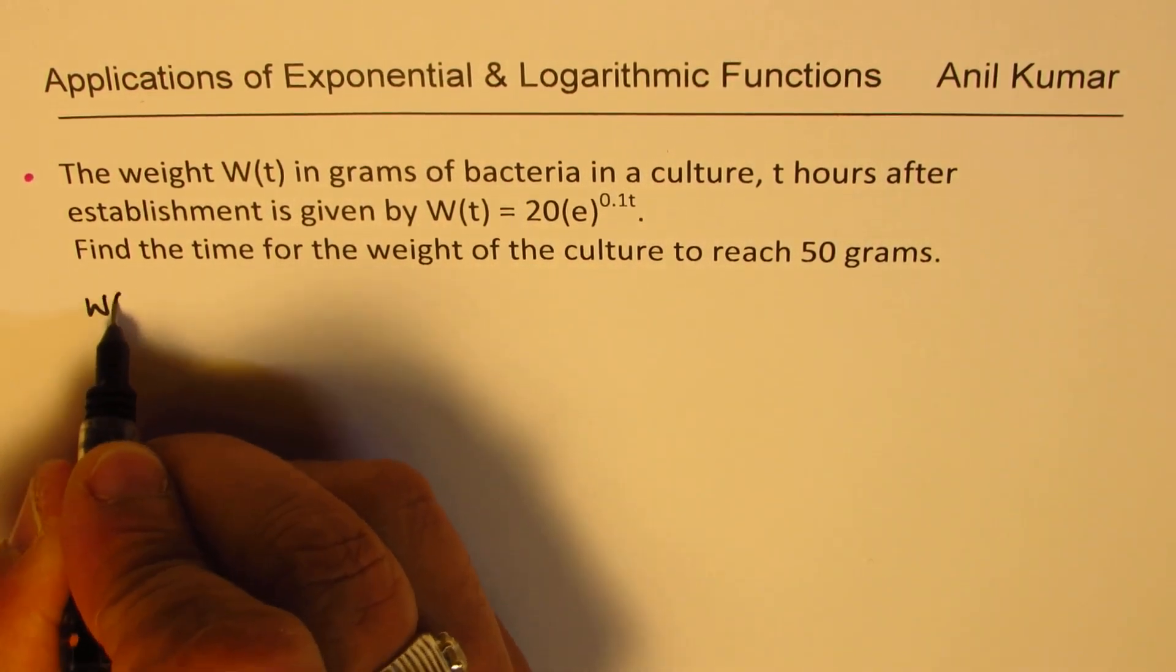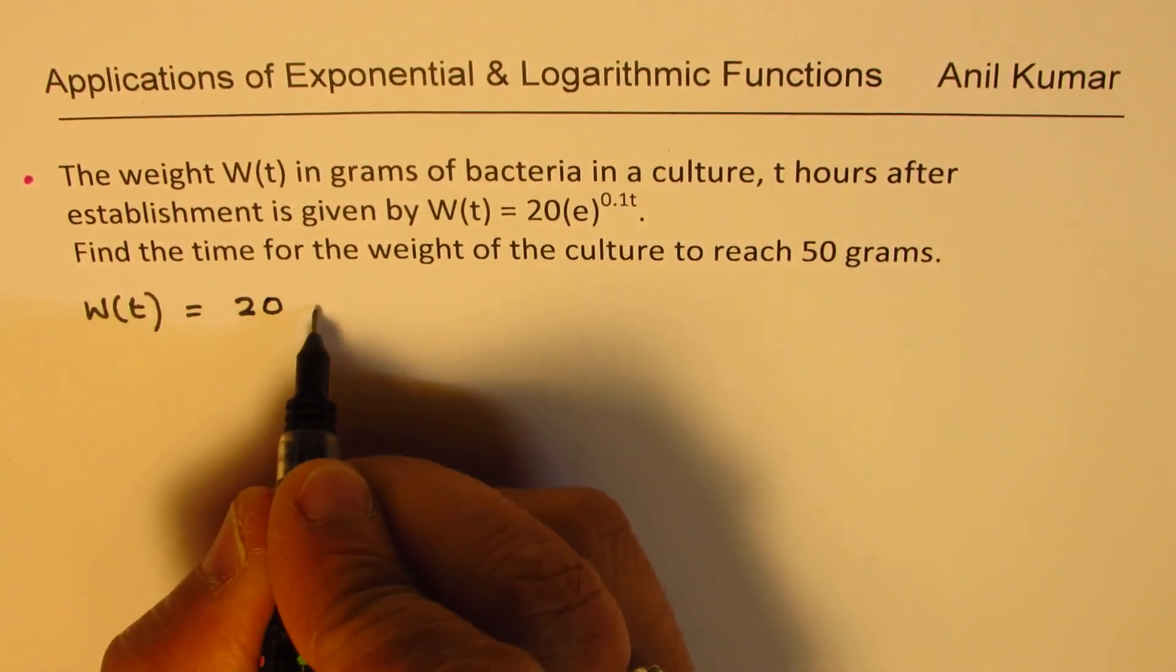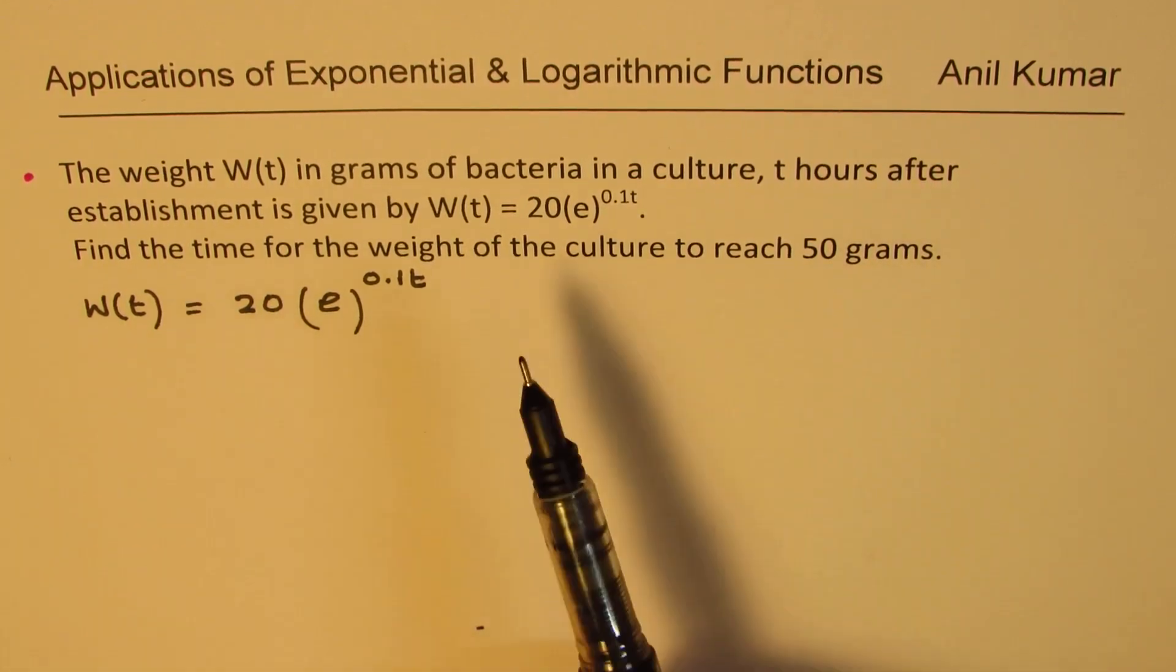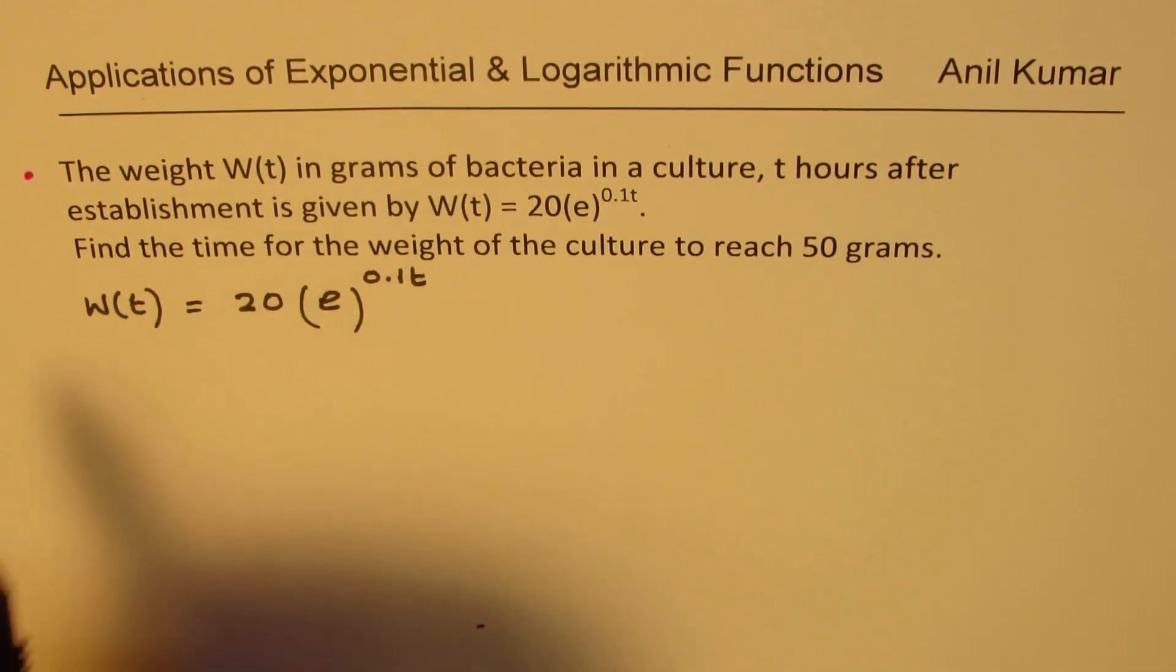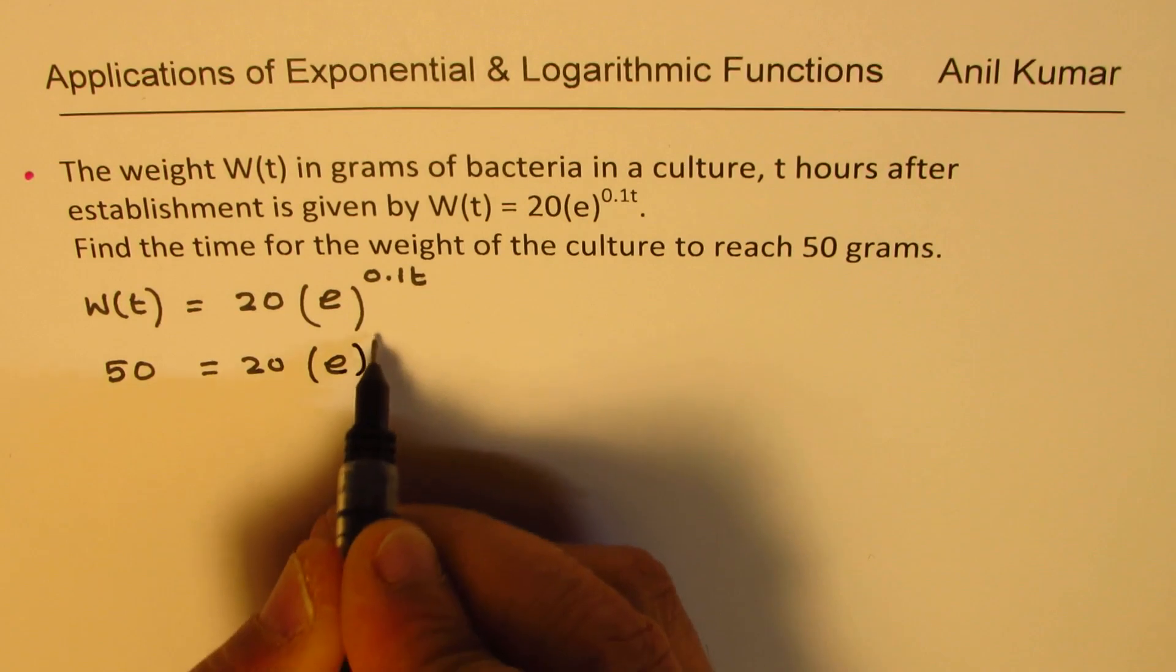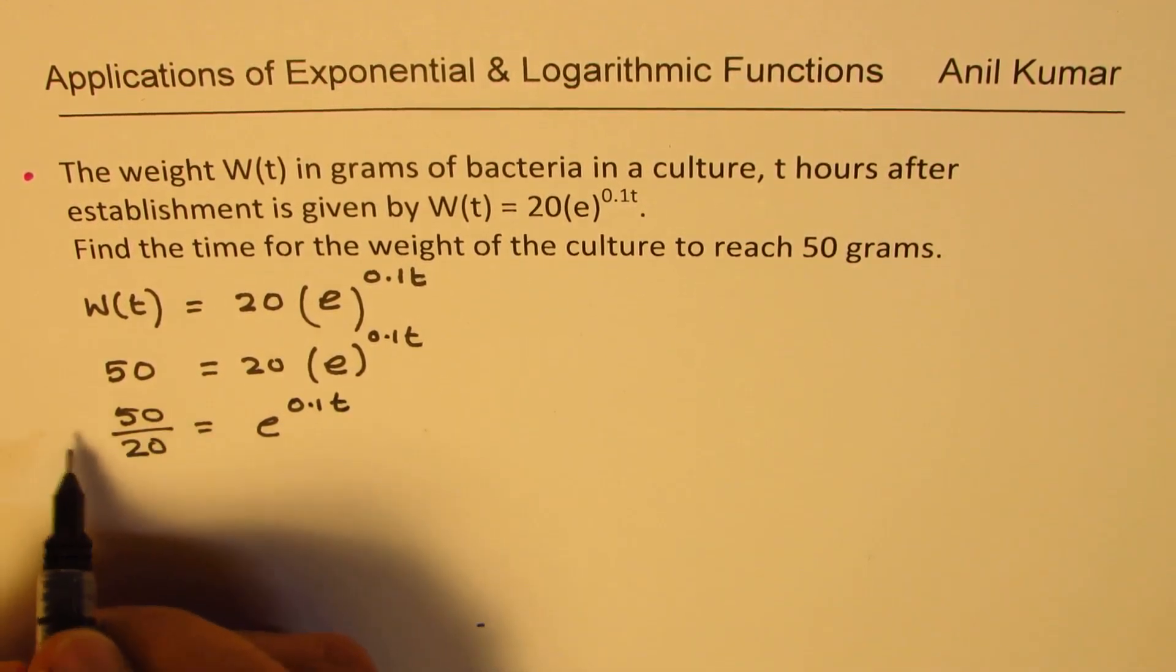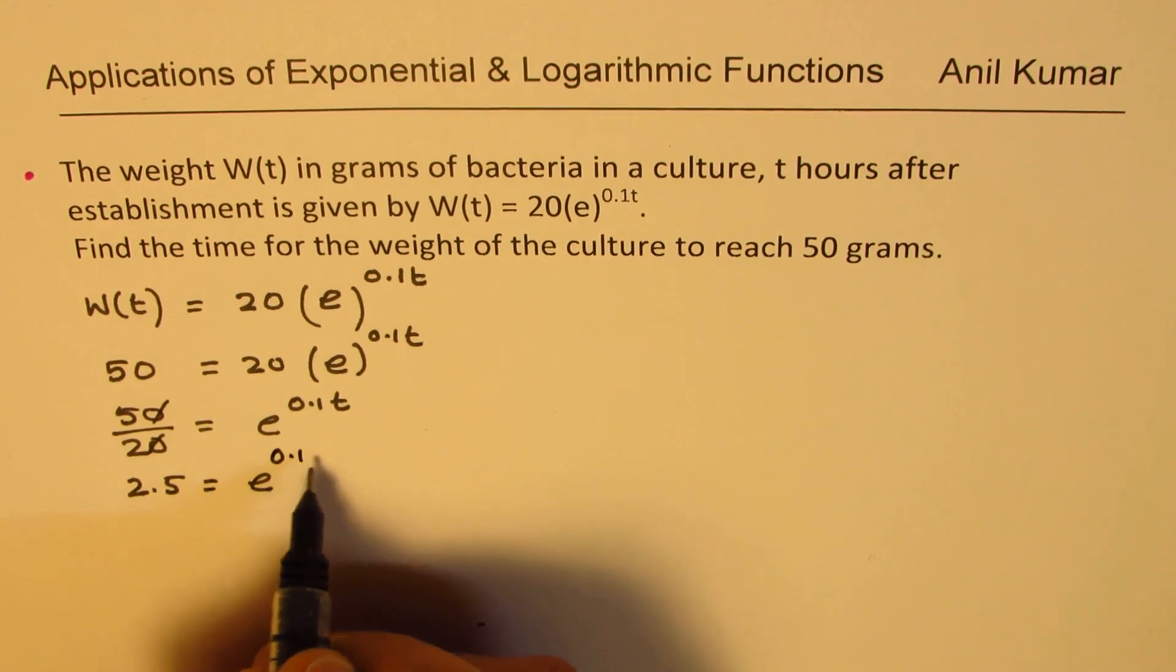Let's begin with the equation. The weight of the culture is given as W(t) equals 20e to the power of 0.1t. First step: we need to find the time when the culture reaches 50 grams. So we'll write W(t) as 50 grams: 50 equals 20 times e to the power of 0.1t. Let's divide by 20, so you get 50 over 20 equals e to the power of 0.1t, which is 2.5 equals e to the power of 0.1t.